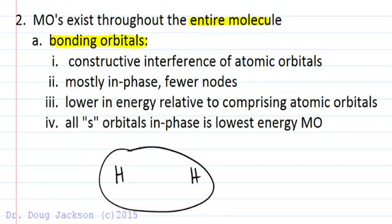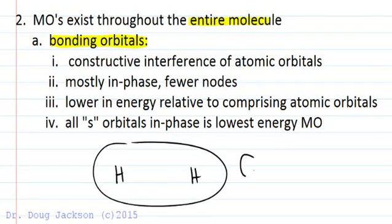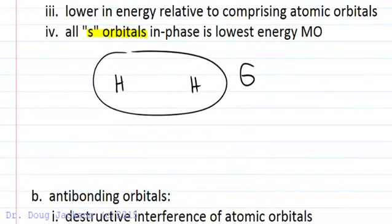With the hydrogen atom we can pick one phase or the other, but s orbitals only have one phase at a time. If we bring them together in phase, the same color as one another, we get the bonding sigma molecular orbital. They're lower in energy relative to comprising atomic orbitals, and the lowest energy overall is when all s orbitals in a molecule are in phase with one another.